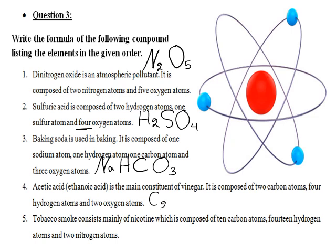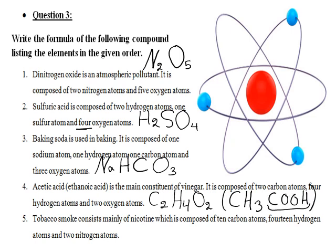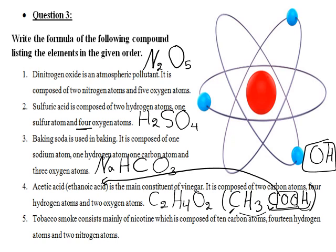Acetic acid (ethylamic acid), the main constituent of vinegar, is composed of 2 carbon, 4 hydrogen, and 2 oxygen atoms: C₂H₄O₂, or written as CH₃COOH. When we see COOH it indicates an acid; OH at the end indicates an alcohol. Nicotine from tobacco smoke is composed of 10 carbon, 14 hydrogen, and 2 nitrogen atoms: C₁₀H₁₄N₂.